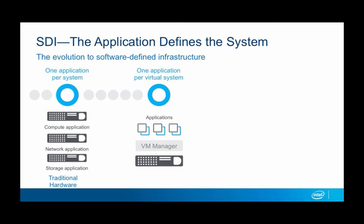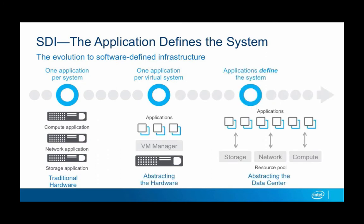From a technology perspective, what we've seen is evolution in the data center from traditional hardware — where we used to have the paradigm of one application per system, with discrete compute, network, and storage devices — to a virtualized one where we're going to one application per virtual system. We're obviously abstracting the hardware and moving into the software-defined data center. In the software-defined data center, the application defines the system, and the whole storage, network, and compute become nothing but a resource pool. So how do we provide security where an intelligent scheduler is taking applications and scheduling them on top of this resource pool?